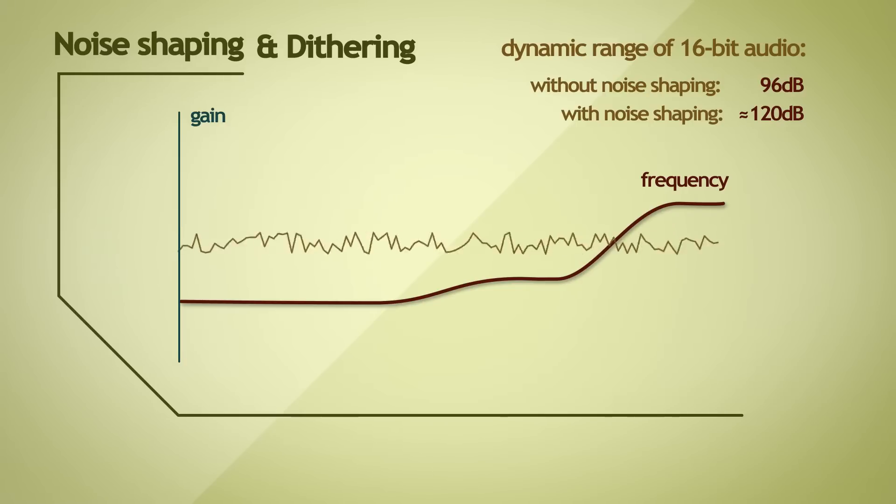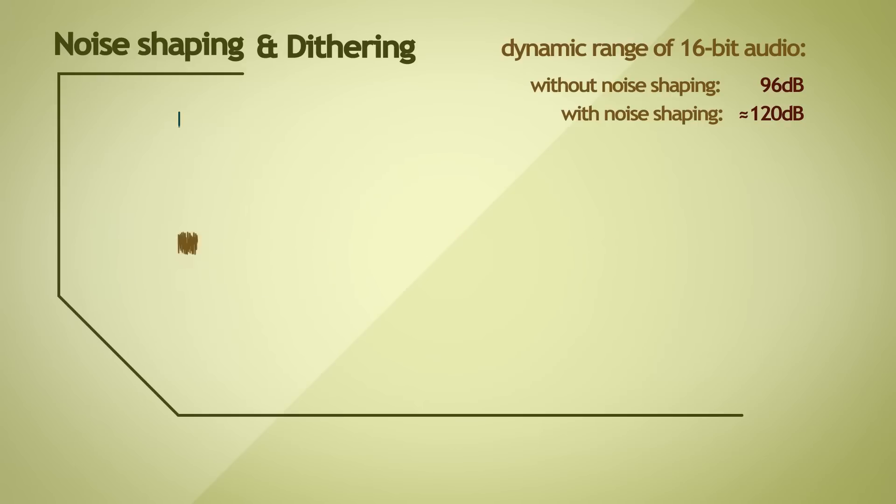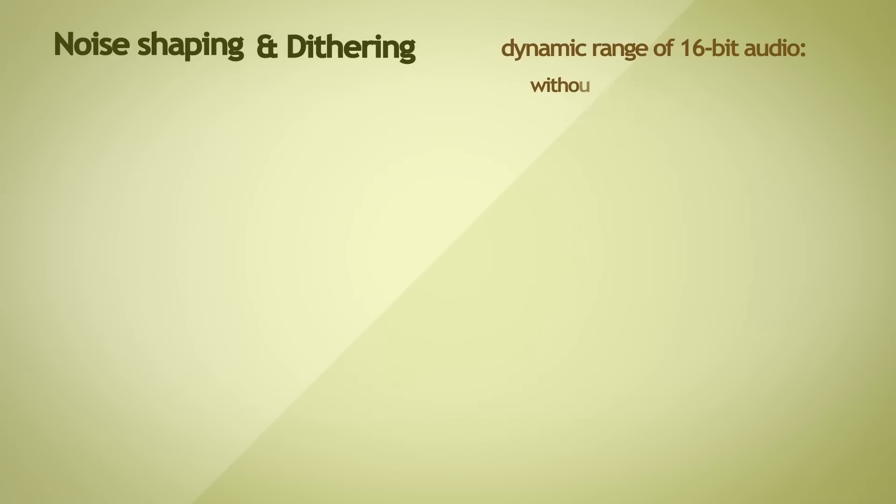There's a caveat when using a technique called delta sigma modulation, rather than the more commonly used pulse code modulation, where noise shaping is a really important and integral part of the process. But that's for another time. Let's not go there yet. That's where noise shaping and oversampling come into picture.